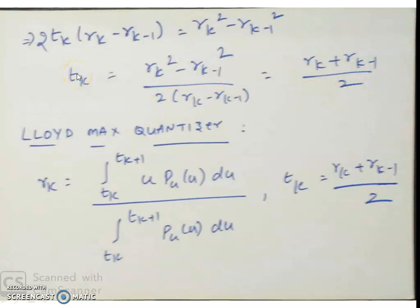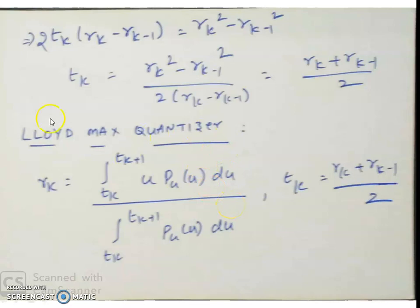In summary, the Lloyd-Max quantizer gives: rk = [integral from tk to tk+1 of u·pu(u) du] divided by [integral from tk to tk+1 of pu(u) du], and tk = (rk + rk−1) / 2. Depending on pu(u), the reconstruction levels are going to change, while tk is always the average of rk and rk−1.